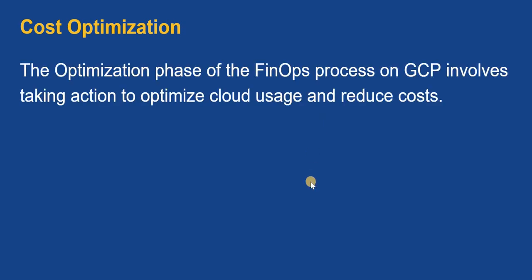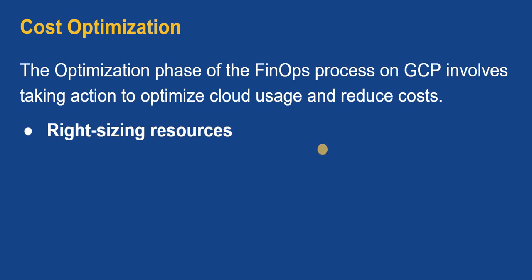The cost optimization phase in the FinOps process involves taking action to optimize cloud usage and reduce cost. The first step is right-sizing your resources. For example, if I have a very small application utilizing only 5% of CPU but I've allocated 8 GB of RAM and 8 CPUs to my VM instance, that's not required. I can right-size — build with lower RAM or lower CPU — using only what you need, like not wasting food on your plate.